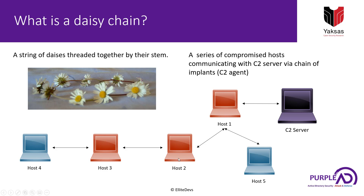For example, if we need to issue a command, our C2 server talks to host one, and host one relays that command to host two. Host two executes the command and returns its result to host one, which in turn returns the results to our C2 server. In this case, host one is called a daisy server, and this chain of the C2 server and these two hosts is called a daisy chain.